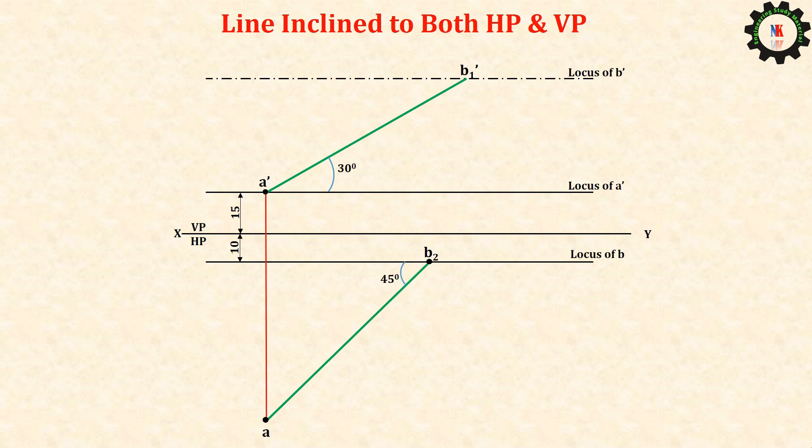Connect A and A dash with a vertical projector. Draw the locus line from A. To find the top view draw a vertical projector from B1 dash up to locus of A.